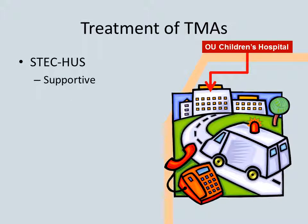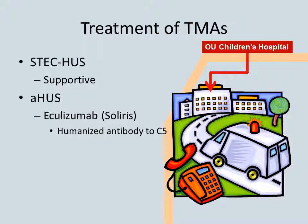Currently, the care of STEC-HUS is supportive. While some children can get through this disorder without dialysis or admission, at a minimum these kids should be discussed with pediatric nephrology. AHUS can now be treated with an antibody to C5 — eculizumab — with dramatic improvement in its long-term prognosis. TTP is treated with plasma exchange, which removes large von Willebrand factor in the circulation and provides ADAMTS-13 activity.